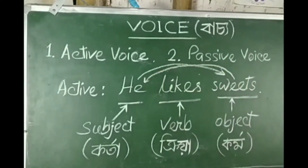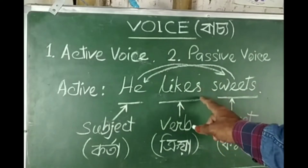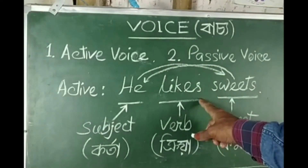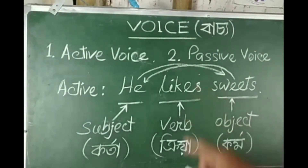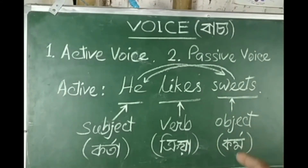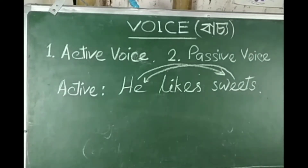To convert to passive voice, take the object and place it at the beginning. The verb is changed to its past participle form. For example, 'like' in past participle form becomes 'liked'.